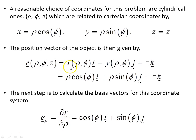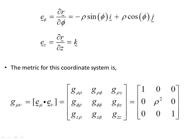So dr/drho, the partial derivative of this vector with respect to rho, is this object here. So the next basis vector E subscript phi will be dr/dphi and that will give us this object here. And then E subscript z will be dr/dz, which just gives us k.